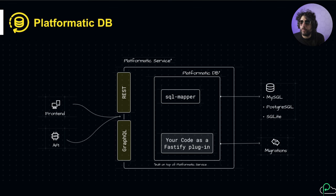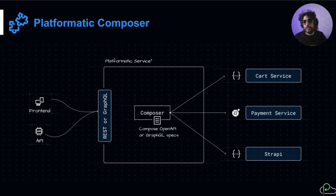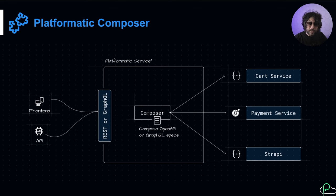On top of Platformatic Service, we have created Platformatic DB. Platformatic DB adds the concept of automatic REST mapping between your SQL database - MySQL, PostgreSQL, SQLite, MariaDB, and so on - to REST and GraphQL. It's similar to other tools like that, but it's all built on top of JavaScript so it's very customizable. It also adds support for migrations. We have also created something called Platformatic Composer, which allows us to do a lot of things in terms of OpenAPI and GraphQL compositions.